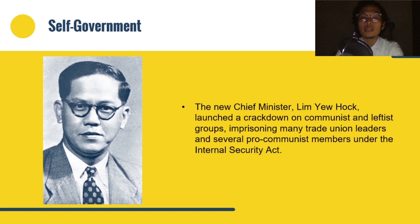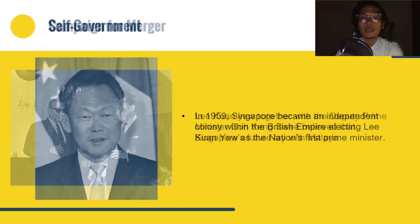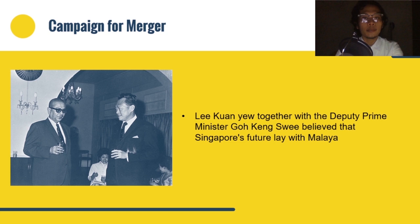The State of Singapore was created with its own citizenship. As a result, in 1959, Singapore became an independent country within the British Empire, electing Lee Kuan Yew as the nation's first Prime Minister. Despite their successes in governing Singapore, Lee Kuan Yew together with Deputy Prime Minister Toh Chin Chye believed that Singapore's future lay with Malaya, feeling that the historic and economic ties between Singapore and Malaya were too strong for them to continue as separate nations.